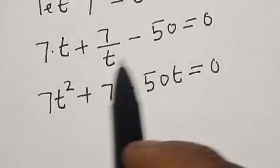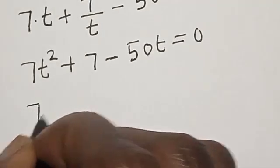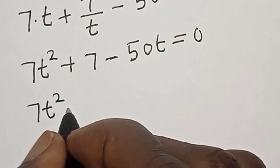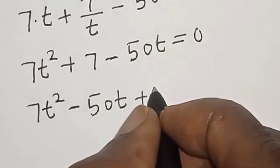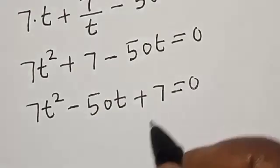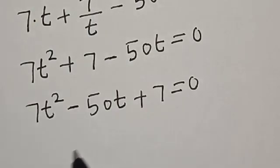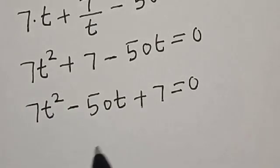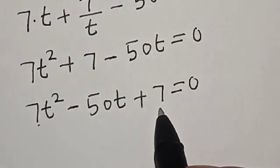That is what you get if you multiply all through by t. Now we have 7t squared minus 50t plus 7 is equal to 0. This is our quadratic equation, and we can solve this using either the factorization method or the quadratic formula. In this case, we are going to use the factorization method. The coefficient of t squared is 7, the coefficient of t is minus 50, and the constant is 7. If you multiply 7 by 7, it is going to be 49.